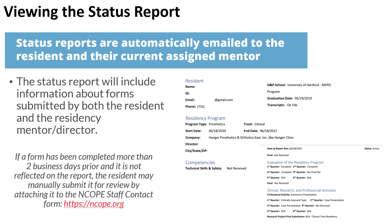Status reports are automatically emailed to the resident and their current assigned mentor. The report includes information about forms submitted by both the resident and their mentor/director, as well as fields such as your name, resident ID, contact email address, and where you attended OMP school. You'll also see 'NA' or 'not applicable' listed in some fields — for example, the fifth quarter may be identified as not applicable for clinical track activities if you're doing a 12-month residency with only four quarters.